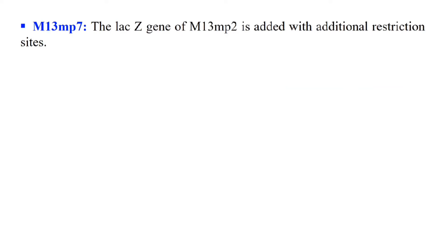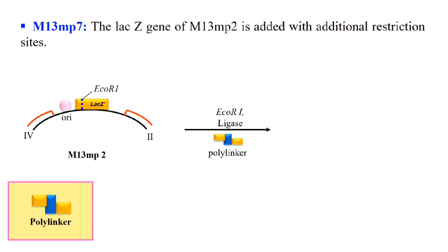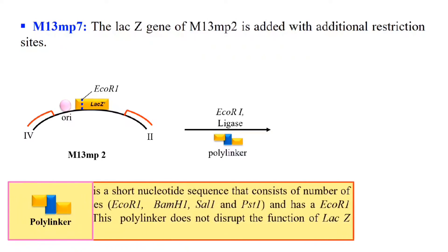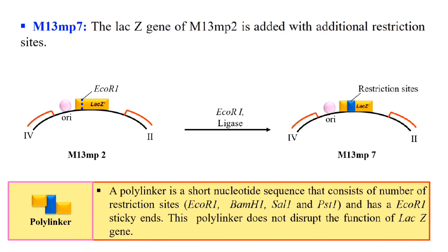Next is M13 MP7, which is also an extension of M13 MP2. We add more restriction sites into the lacZ gene, and this is generally done with the help of a polylinker. A polylinker is a short nucleotide sequence which contains restriction sites for many enzymes like EcoR1, BamH1, Sal1, Pst1, etc. It can integrate into the lacZ gene and create restriction sites here. This polylinker can be incorporated into the lacZ gene and ultimately creates restriction sites for EcoR1, BamH1, and so on. This is now known as the M13 MP7 vector.